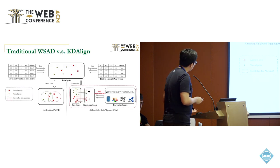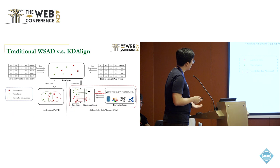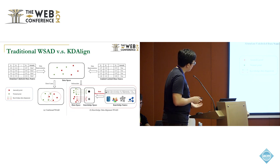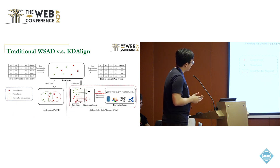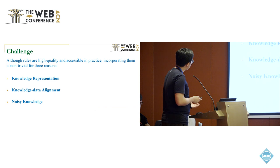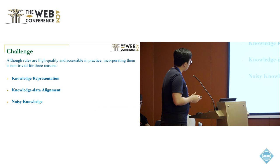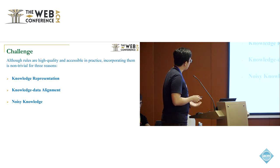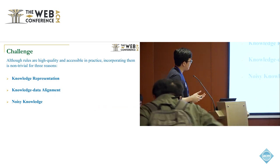This figure can clearly illustrate the key difference between traditional WSAD approaches and our proposed KD-Align approach. While traditional WSAD approaches mainly concentrate on the limited labeled data, our proposed KD-Align can supplement the limited labeled data through knowledge-data alignment by incorporating additional knowledge. Although rules are high-quality and accessible in practice, incorporating them is not trivial for three reasons. The first reason is the knowledge representation: rules are generally represented by if-else rule statements, and in the representation space, rules and data lack a direct correlation, making them unsuitable for directly training WSAD models.